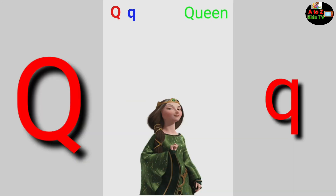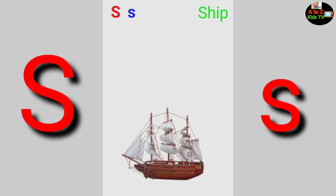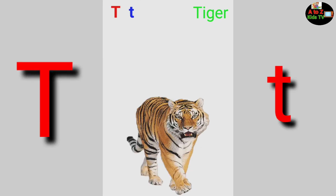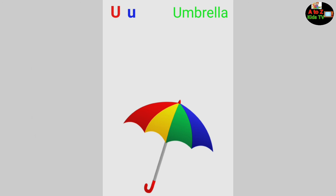U for Queen, R for Rabbit, S for Ship, T for Tiger, U for Umbrella.